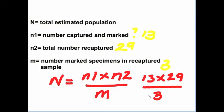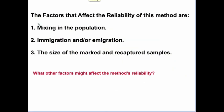You will be using the Lincoln index, which is the formula to carry out the mark release recapture method. Consider now some factors that affect your method. The mixing has to be complete, the size of the marked and recaptured samples, whether you have snails coming in and going out of the habitat.